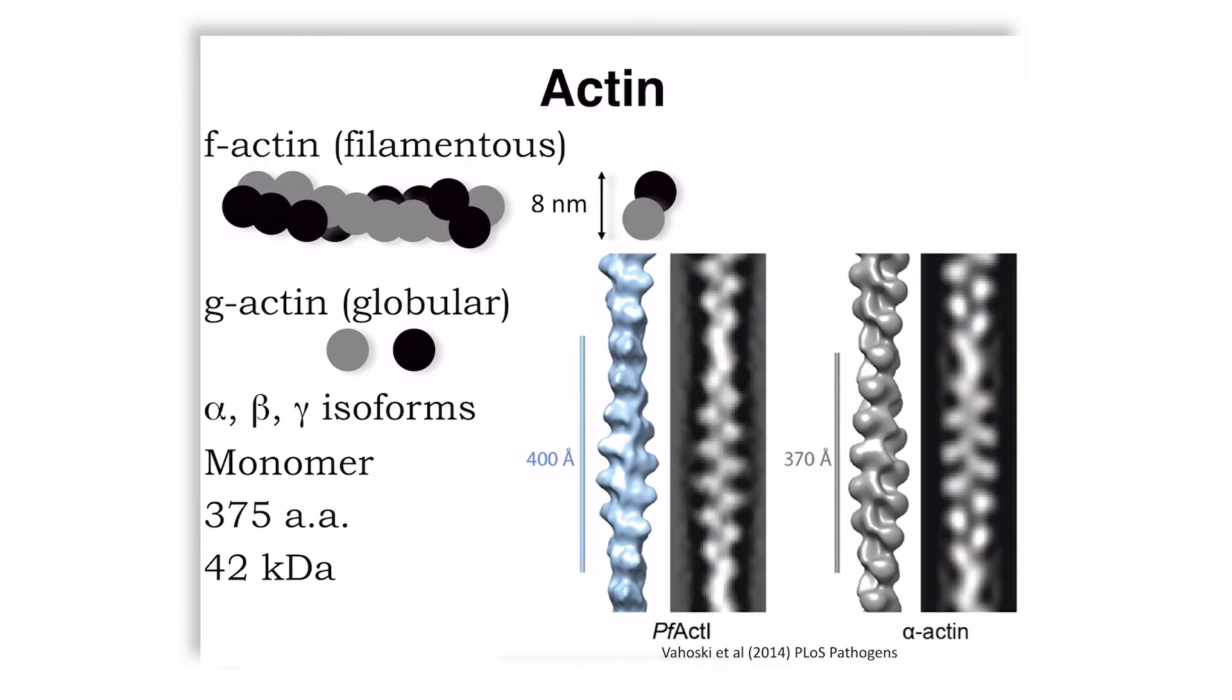In fact, there are multiple isoforms of actin: alpha, beta, gamma, and these are usually developmentally expressed. The protein itself, even across species, for example alpha-actin from a mammalian system compared to plasmodium falciparum, the malaria parasite actin, you see that the structure is slightly more elongated in the comparison that is made here from cryo-electron microscopy data.